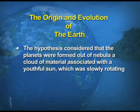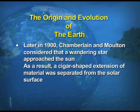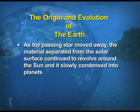This hypothesis considers that the planets were formed out of a nebula — a cloud of materials associated with a youthful sun which was slowly rotating. Later on, Chamberlain and Malton also considered that a wandering star approached the sun, and as a result a cigar-shaped extension of material was separated from the surface. As the passing star moved away, the material separated from the solar surface continued to revolve around the sun and slowly condensed into planets.